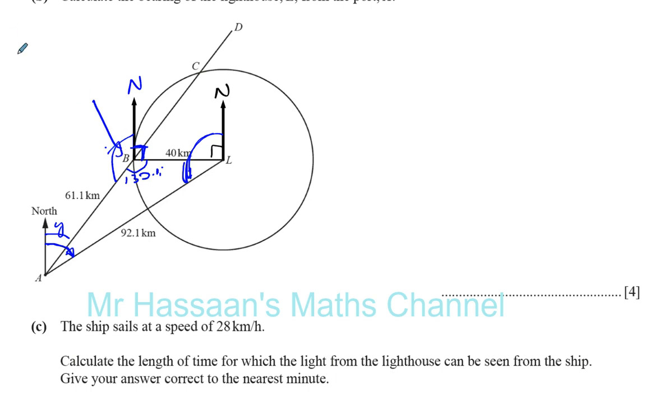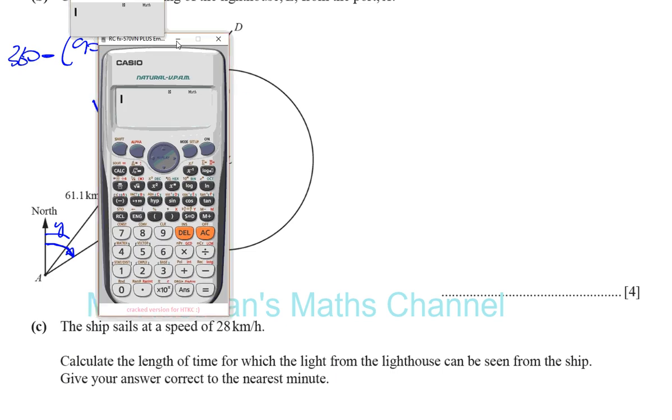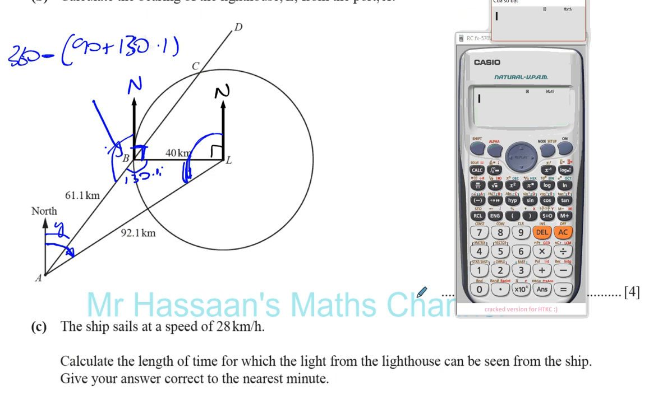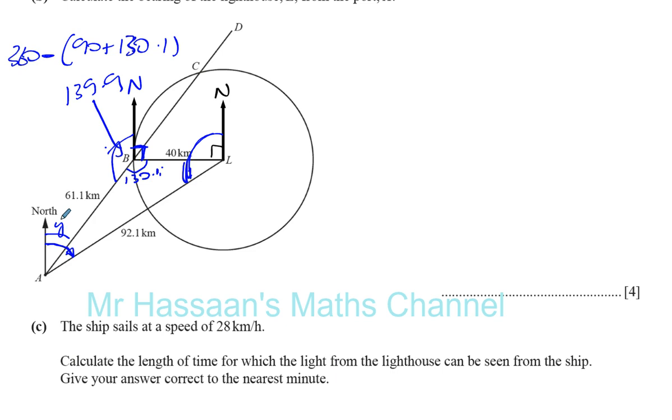I'll say that this angle here is 360 minus 90 plus 130.1. And that gives you 139.9 degrees. So this is 139.9 degrees. So therefore, the angle we want here, Y, is going to be 180 minus 139.9, because these are both north lines, these are interior angles. They add up to 180.